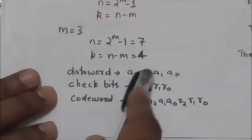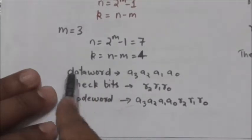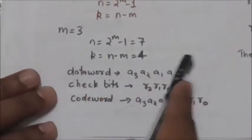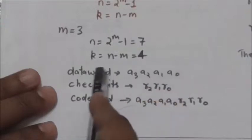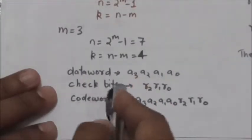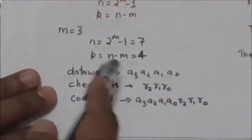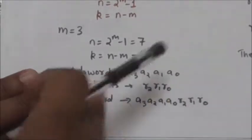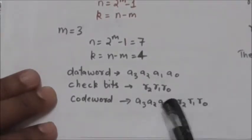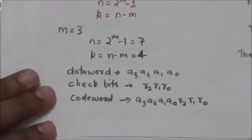So the data word will be of 4 bits. Now suppose the data word bits are a3, a2, a1, and a0. They represent the bits of the data word. The check bits are r2, r1, and r0. Therefore the code word will be: a3, a2, a1, a0, r2, r1, r0.